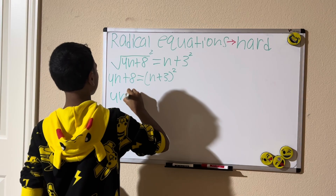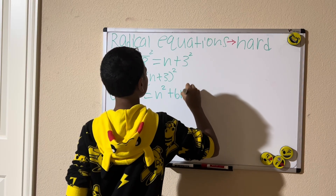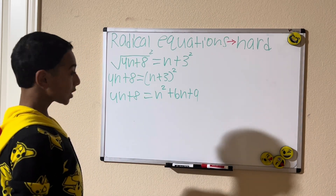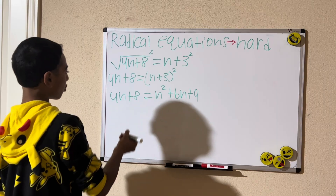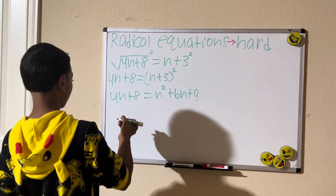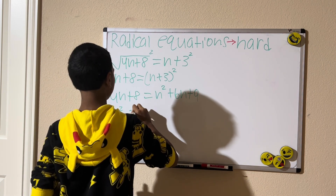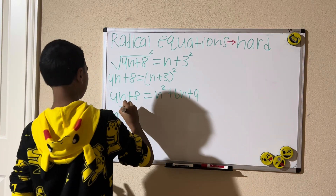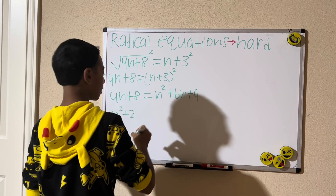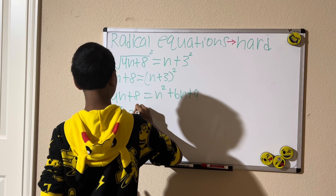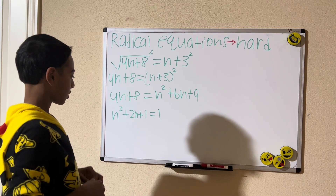So we have 4n plus 8 equals n squared plus 6n plus 9. We still need to rearrange the equation. I'm going to subtract 4n and subtract 8 from both sides, which gives us n squared plus 2n plus 1 equals zero.